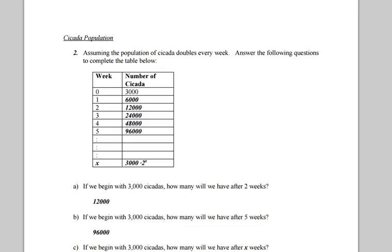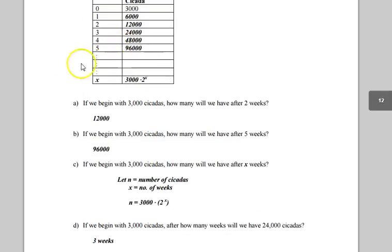We should do it again here. 2 cubed is 8. What do we multiply 8 by to get 24,000? 3,000. So your general form here should be, and it's just kind of written out in general form. N is the number of cicadas. X is your number of weeks. So your function here should be 3,000 times 2 to the x.